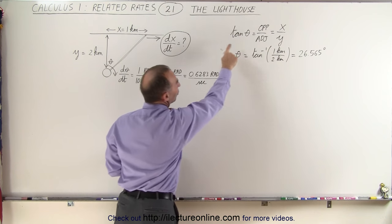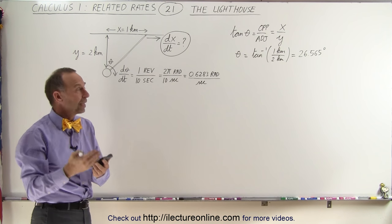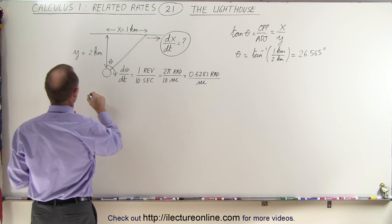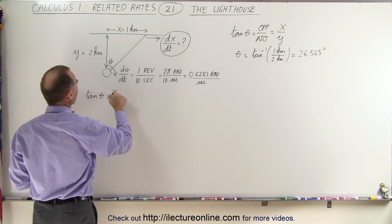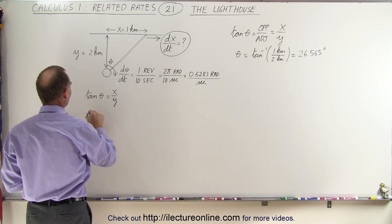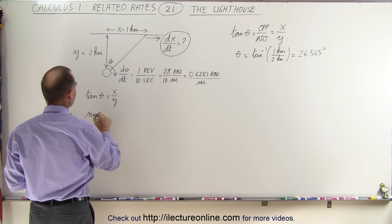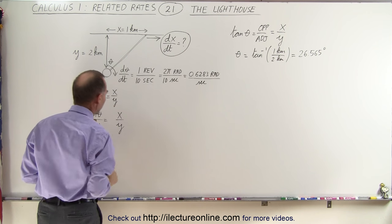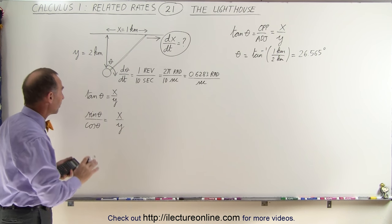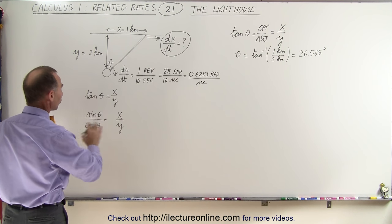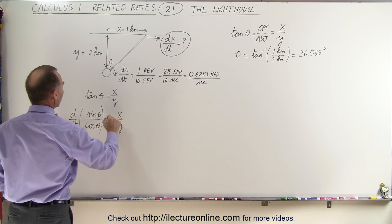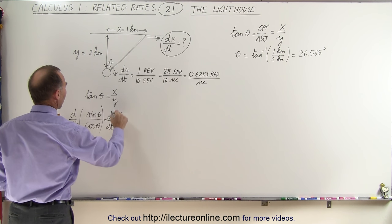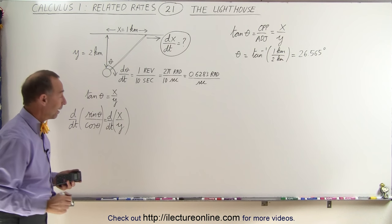Well, we can go back to our original equation where we relate the angle theta to x and y. So we have tan(θ) = x/y, or the tangent can be written as sin(θ)/cos(θ) = x/y. Now what I can do is take the derivative with respect to time of both sides of the equation. The d/dt of the left side should equal the d/dt of the right side. So let's go ahead and do that.